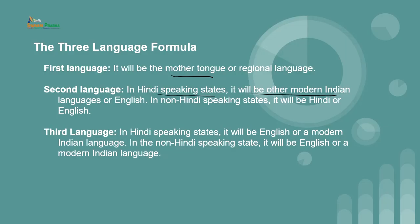The second language: in Hindi-speaking states it will be other modern languages or English; in non-Hindi speaking states, it will be Hindi or English. So this child going to school where English is taught as a medium of instruction will consciously learn the English language, its use and usage. Therefore, the second language will be considered English in the context of this child. The third language: in Hindi-speaking states it will be English or a modern Indian language; in non-Hindi speaking states it will also be English or a modern Indian language.